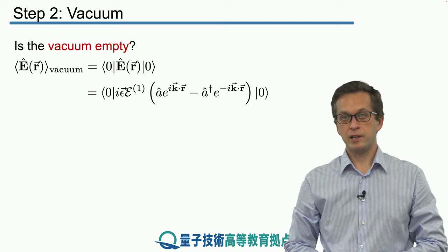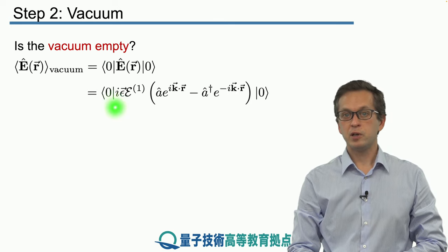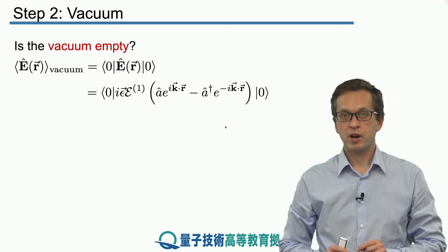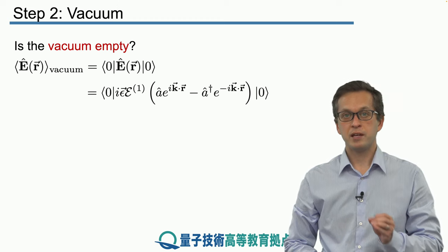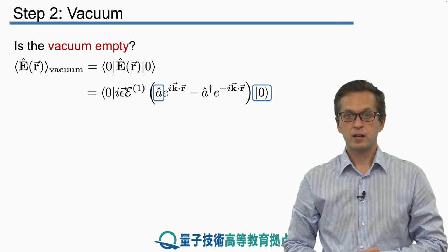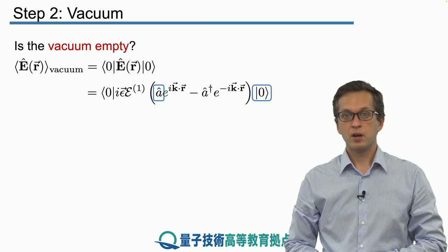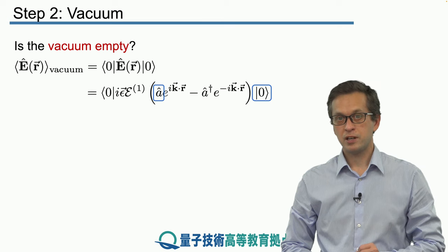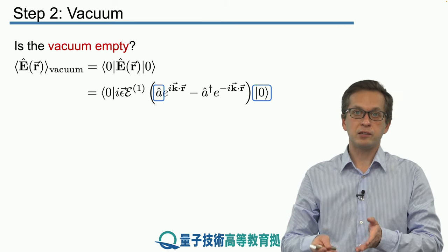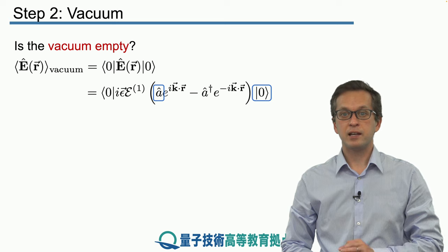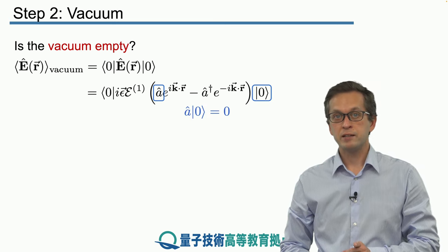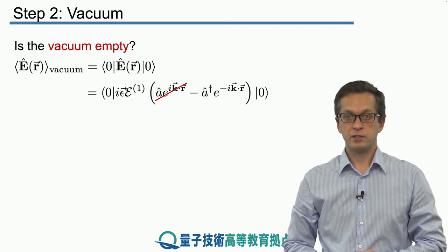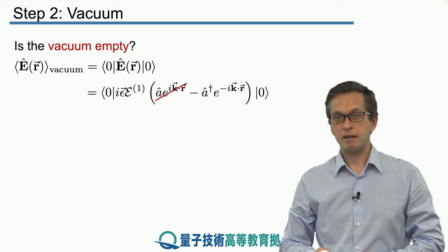So the average is given by this expression. We substitute for our electric field operator and we get this seemingly complicated expression. But really the important parts are how does a act on vacuum and how does a dagger act on vacuum? The definition of A acting on the lowest eigen energy state of a simple harmonic oscillator, in this case electromagnetic vacuum, is that it annihilates it. In other words, A applied to ket zero is equal to zero, meaning the first term vanishes.